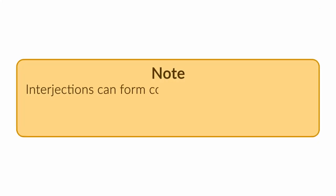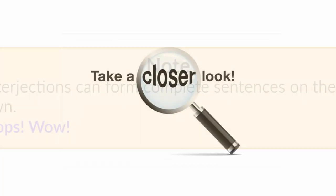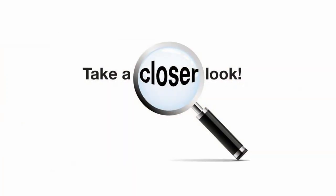Interjections can form complete sentences on their own. For example: oops, wow. Okay, then let's take a closer look at the parts of speech and learn their functions and subcategories with examples of course.